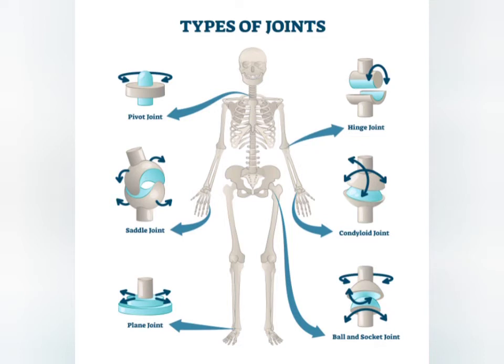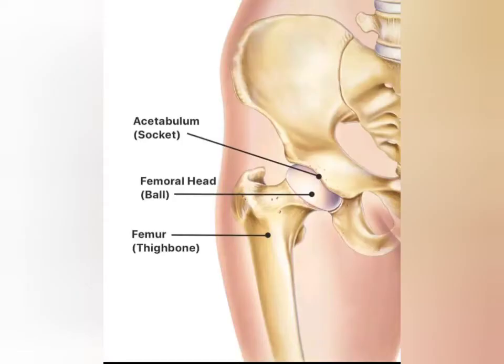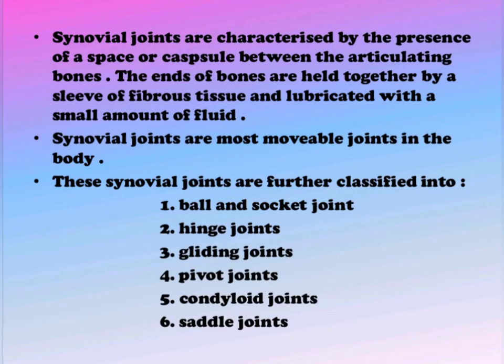The ball and socket joint allows for a wide range of movement including flexion, extension, adduction, abduction, rotation, and circumduction. Examples include the shoulder and hip bones.